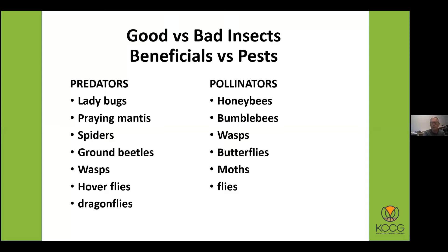Many people think of wasps as dangerous stinging insects, but there are many species of wasps and most don't sting people — they're actually pollinators, and some are also predators. Butterflies and moths do a little pollinating, and there are even some flies that pollinate as they go from flower to flower. With pollinators like the honeybee, it's not trying to pollinate flowers on purpose — it happens as a side effect of visiting flowers to get nectar. They carry pollen on their legs and bodies, spreading it to the next flower.